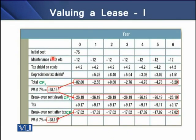Dear students, you can see we have a cash flow chart over the lease term. We have the initial cost, we have maintenance cost, then tax shields on this maintenance cost, and then tax shield on the depreciation. If we add up these cash flows, we have the total cash flows highlighted in the red block. When we convert these cash flows into their present value, we have a present value of $98,150.